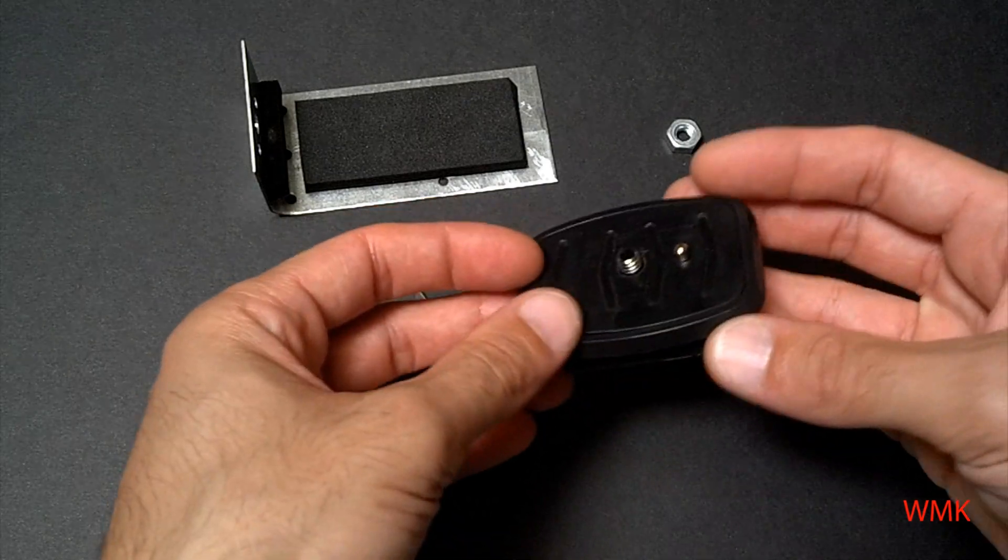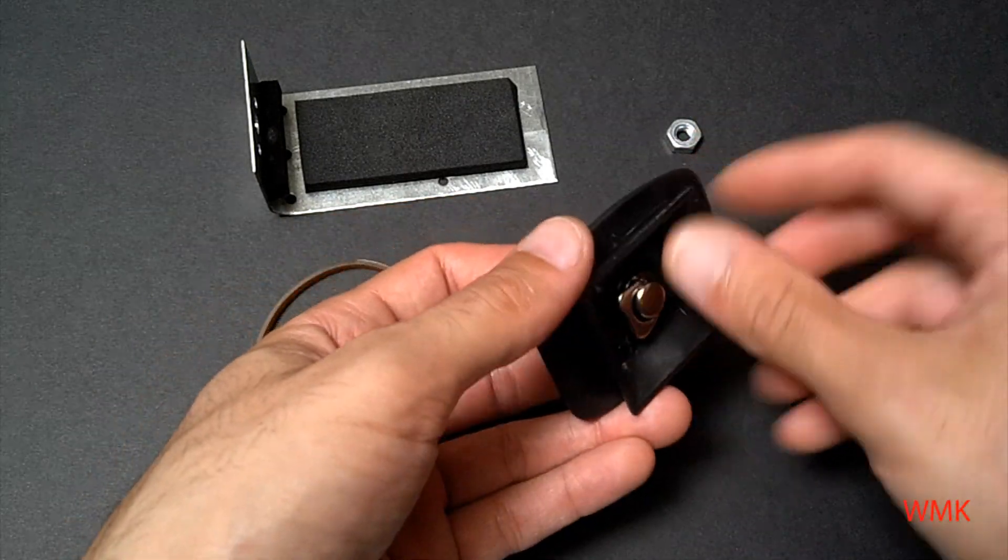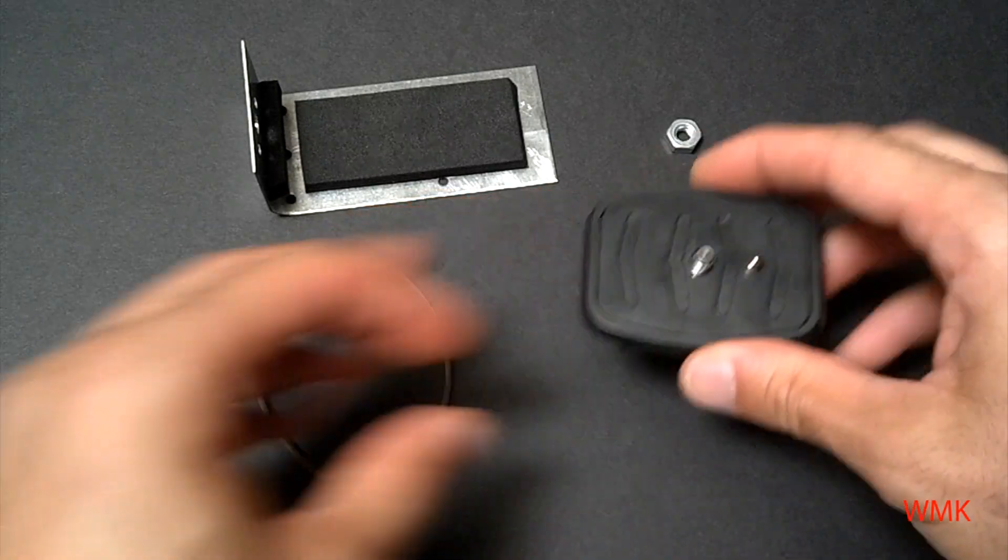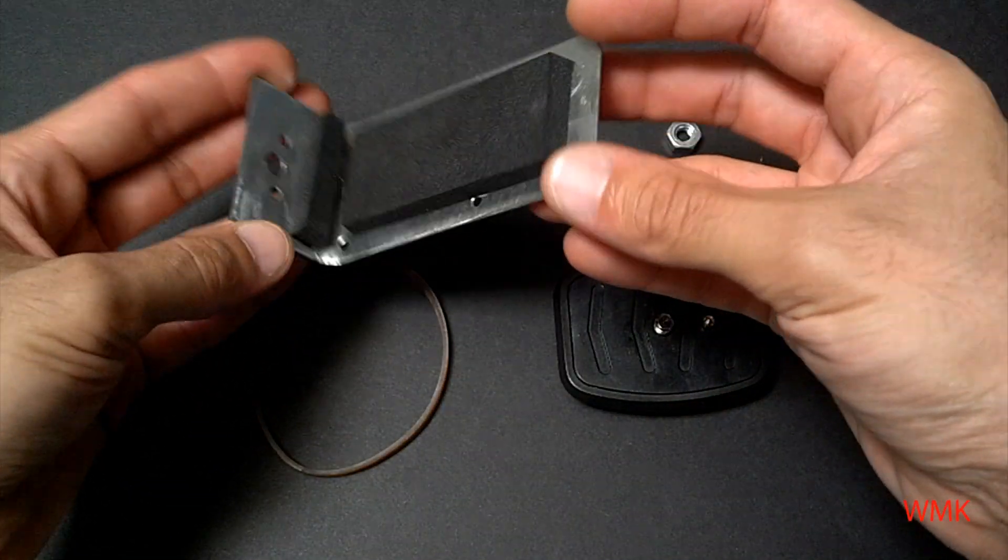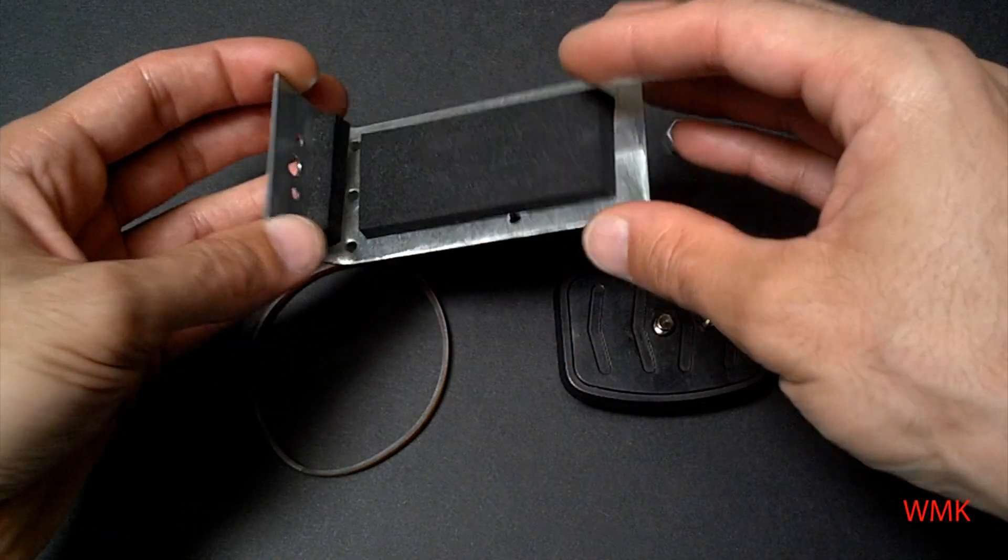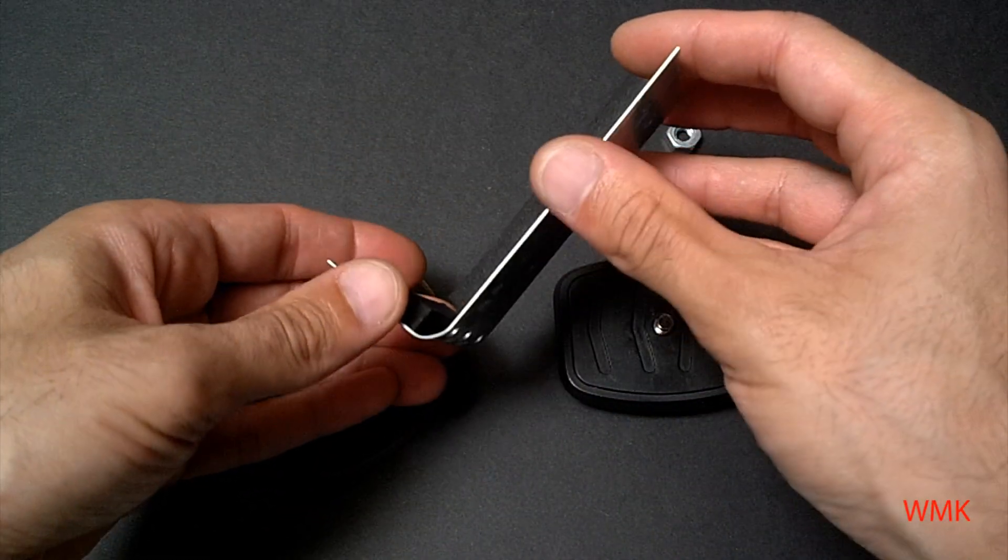What you're going to need is a tripod top like a ball head, something like that, clips onto a regular tripod. Then you're going to need a rubber band, and you're going to need a flat piece of metal and preferably some foam, but that is not necessary.